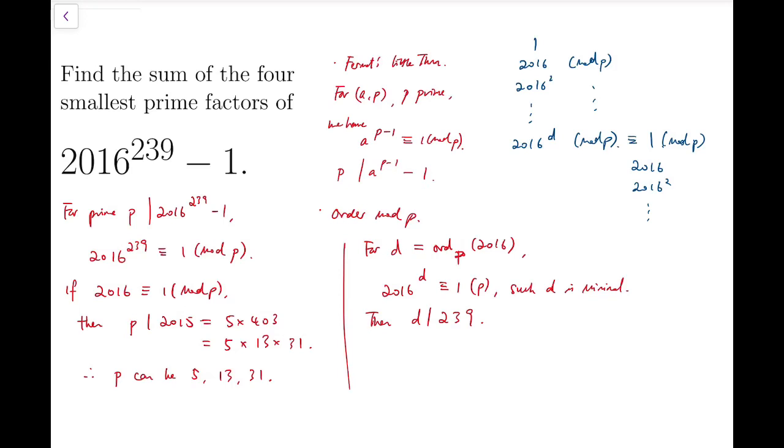Now this sequence is periodic with period d. So if we again reach 1 after 239 terms, then 239 must be a multiple of d. But because 239 is a prime number, we know that d must be exactly 239.